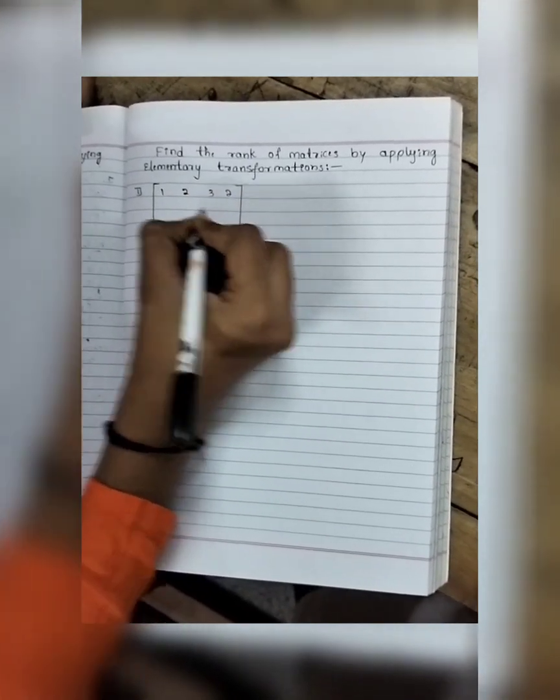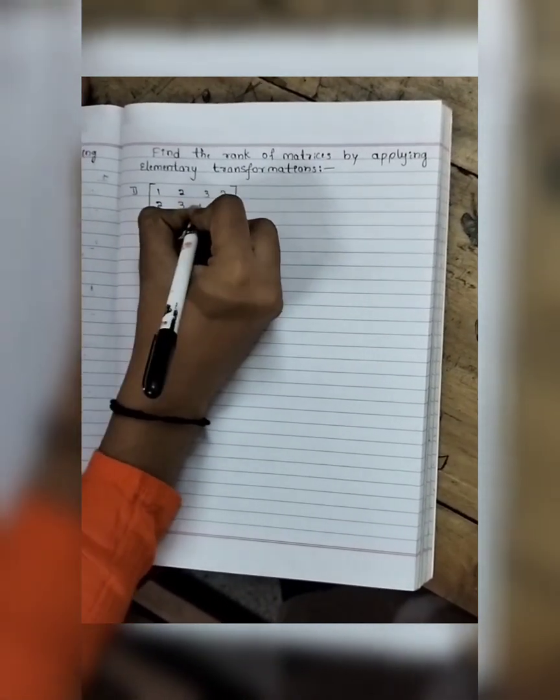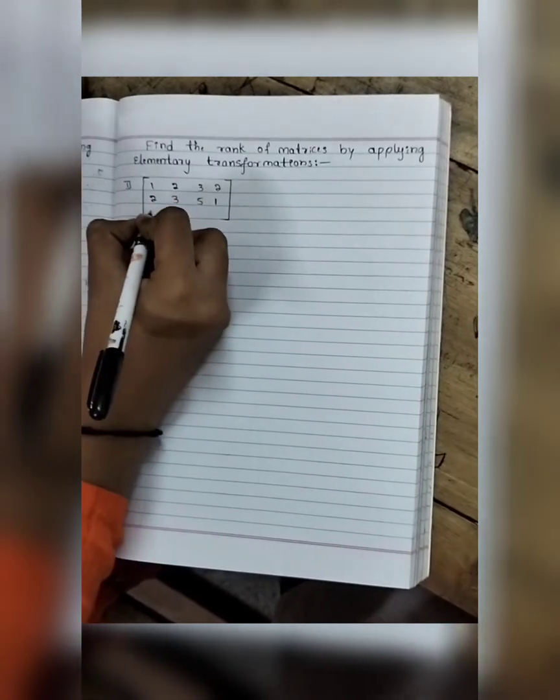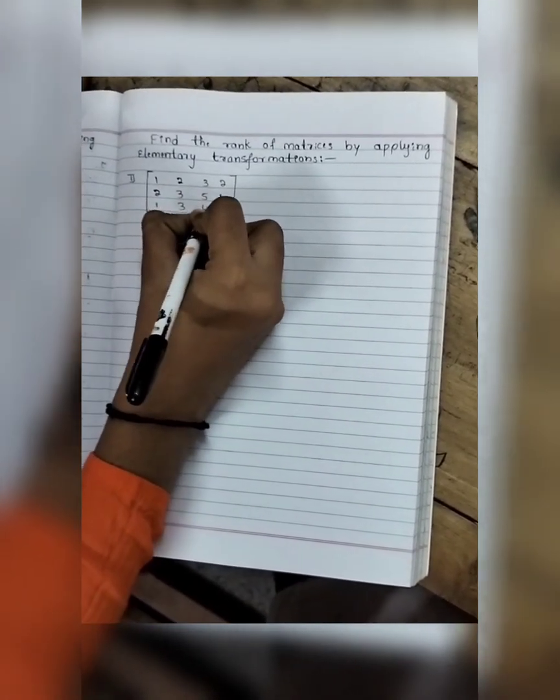Example 1: The matrix is 1, 2, 3, 2 in the first row; 2, 3, 5, 1 in the second row; and 1, 3, 4, 5 in the third row.